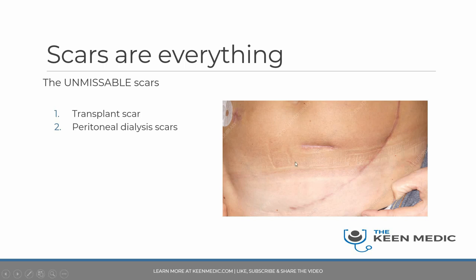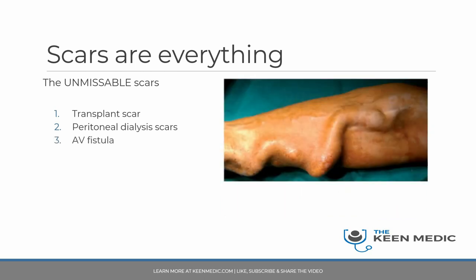This is what a peritoneal dialysis scar often looks like. It is usually around the belly button area and can be on either side, depending on where they have tunnelled the peritoneal catheter.